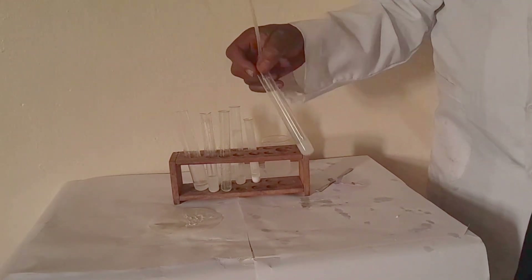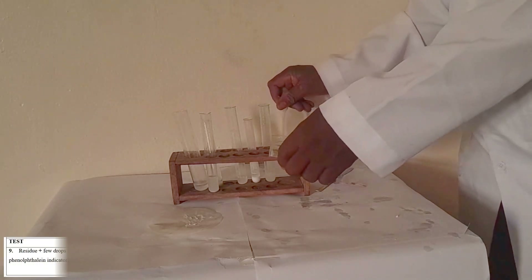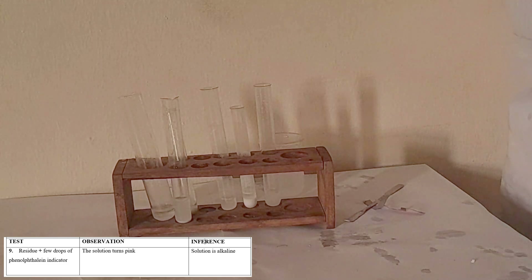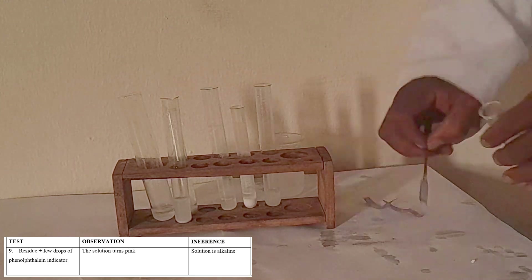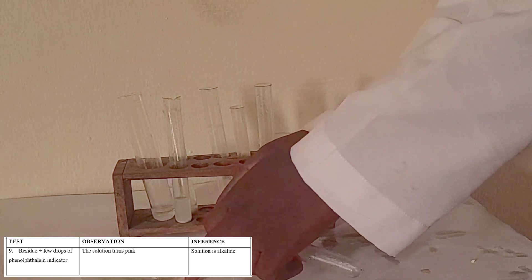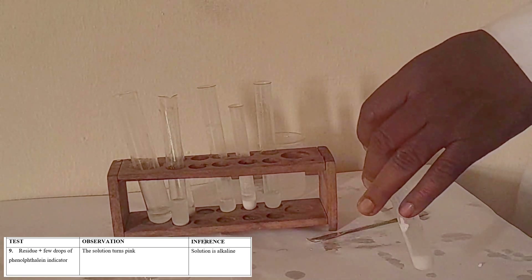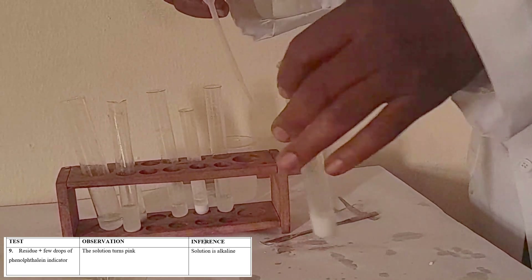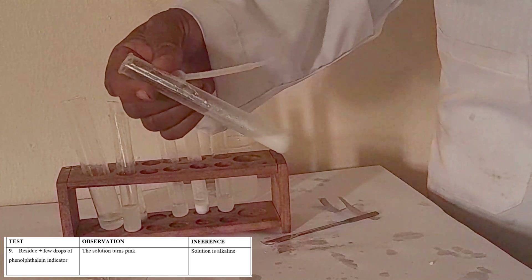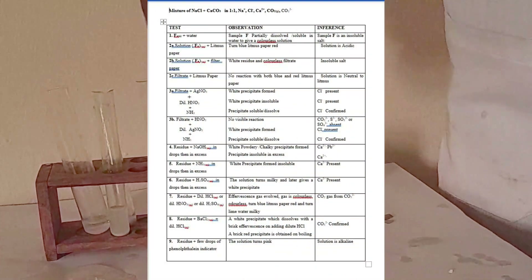Lastly, let's check with phenolphthalein. If it turns pink, it's alkaline; no color change means neutral. The residue does not turn phenolphthalein pink, so it's a neutral salt, not alkaline. Thank you for watching the video, see you bye.